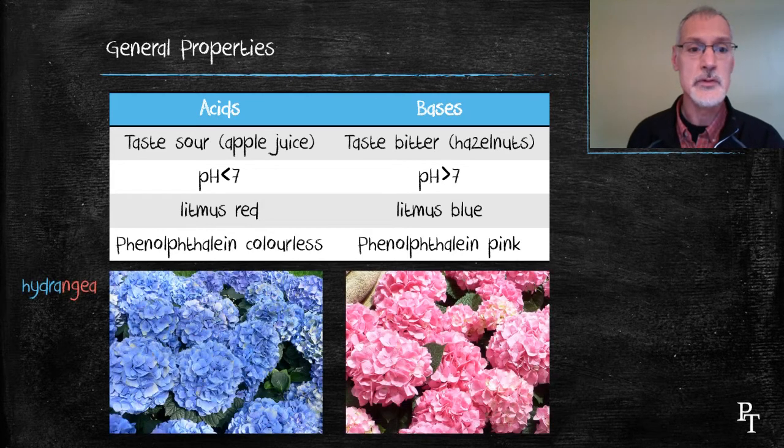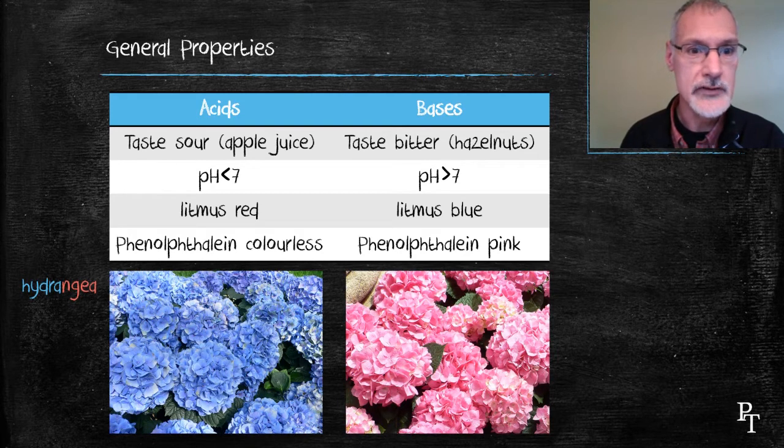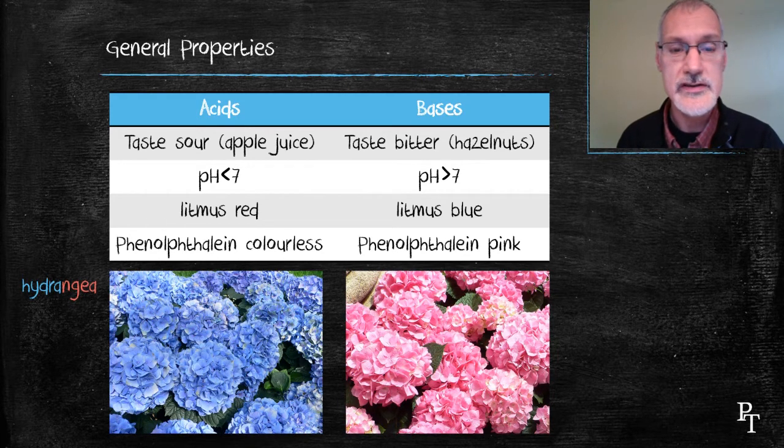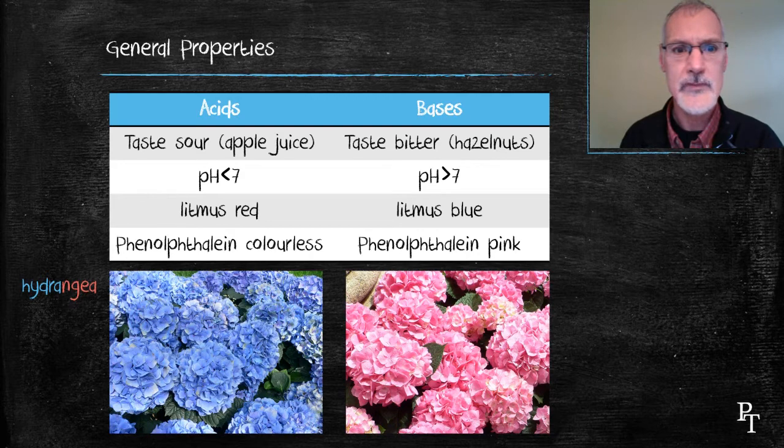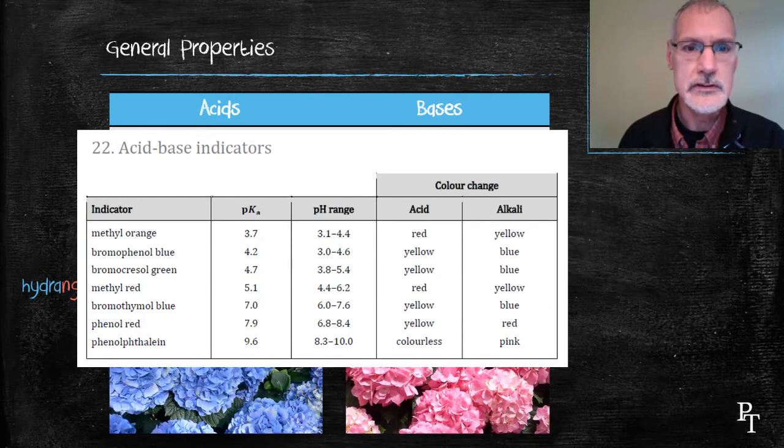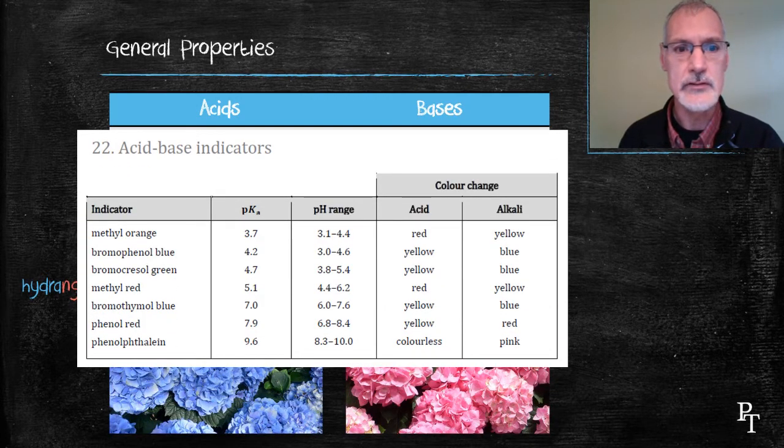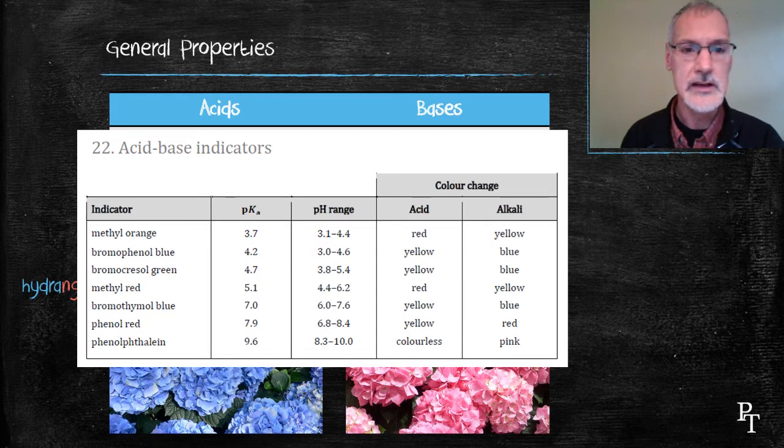You may not be familiar with the plant hydrangea, but it also behaves differently in acidic and basic conditions. In acidic conditions, the hydrangea plant will turn a blue color and in alkali or basic conditions, more of a pink color. Table 22 in your IB data booklet also has the behavior of several chemical indicators and their color changes.